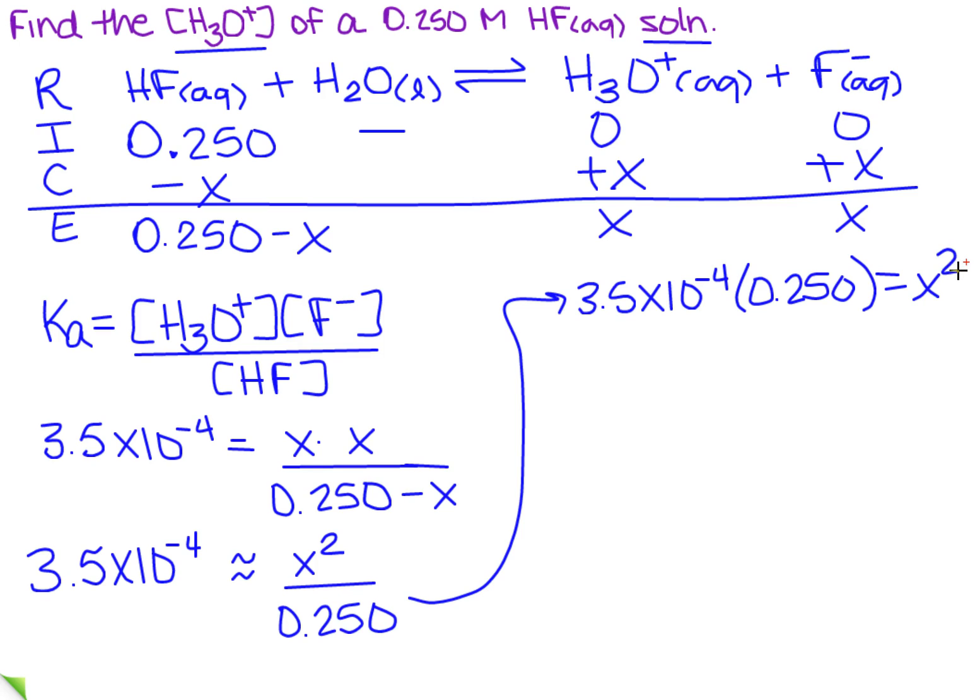So I'm going to do the multiplication and take the square root. So if you want to go ahead and say I'm going to take the square root of that and the square root of this, and that's going to give me 0.00935 for X.